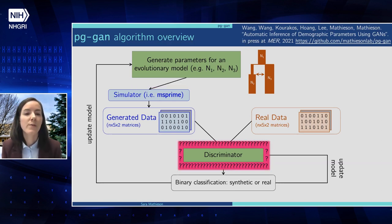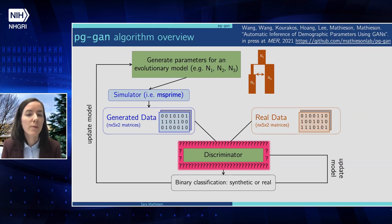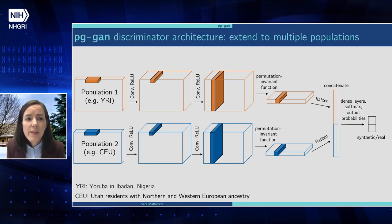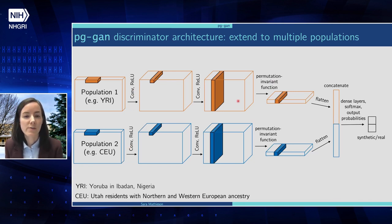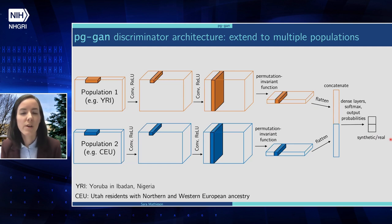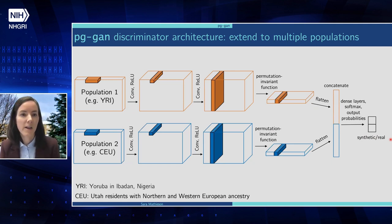For the discriminator, we chose a CNN and expanded on the permutation-invariant CNN I described earlier to include multiple populations, since we want to include a richer set of evolutionary models. Within each population, samples are permutation invariant, but between populations they are not. After several convolutional layers, we collapse along the rows and concatenate the two populations together. Instead of the output being an evolutionary parameter of interest, it is a binary output — the probability of being real or fake. This is a binary classification problem.